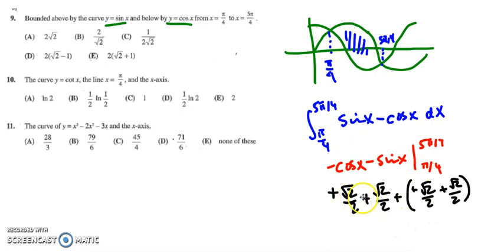So having rad 2 plus rad 2 well that's 2 times rad 2 over 2 which is just rad 2. And here same thing so I'm dealing with rad 2 plus rad 2. My answer is A.